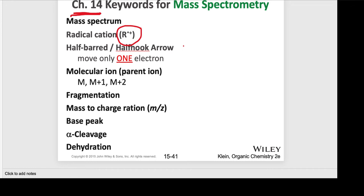It also becomes very important for us to understand arrow-pushing formalism. We have a curved arrow that moves two electrons, but we also have what's called a half-barred or half-hook arrow — I've underlined it here and put it in red — and only one electron moves with that. Very often we have to either draw one or an odd number of half-hook arrows to understand the electron movement.